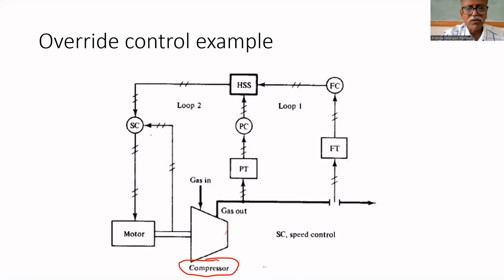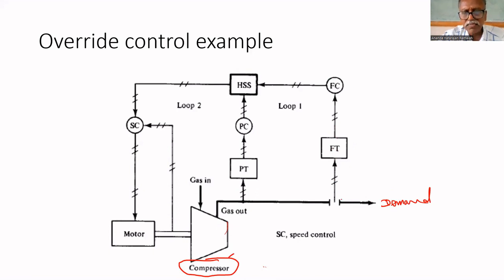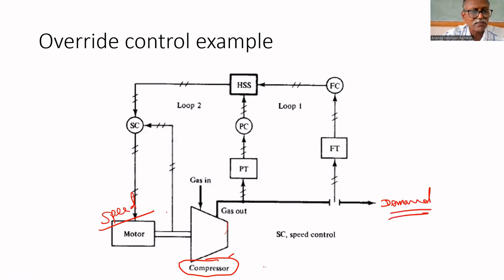Another example for override control is a compressor. The compressor will supply pneumatic signal to many processes. For that, a flow controller is there. Depending upon the demand, the flow transmitter will adjust the speed of the motor. To maintain the flow rate, it will adjust the motor. If the demand increases, the flow rate will decrease, so the motor speed has to be increased.